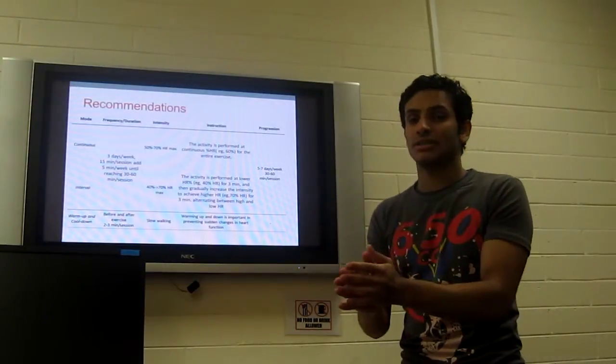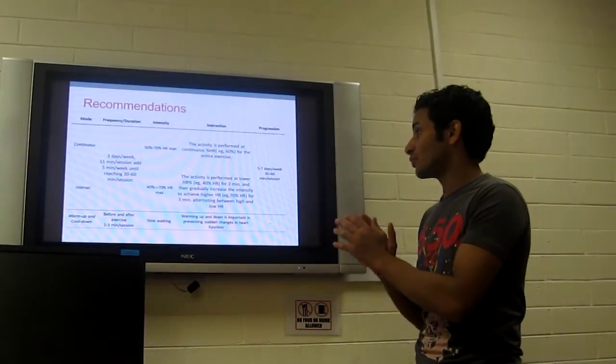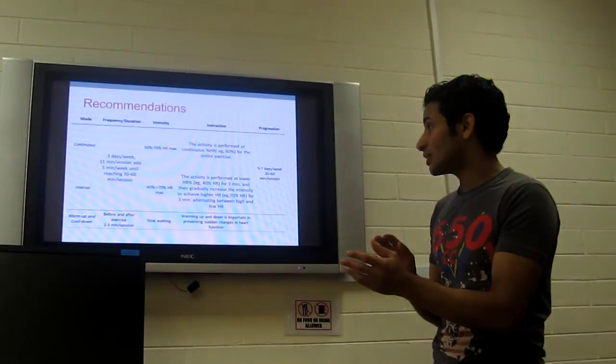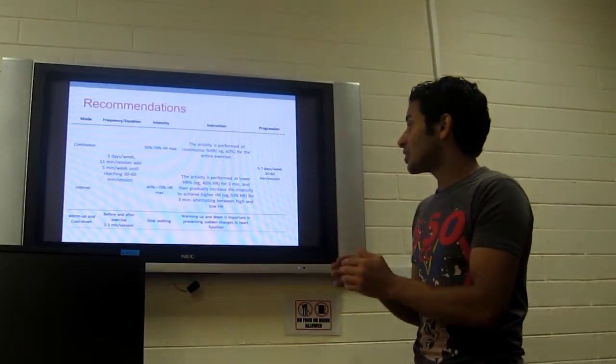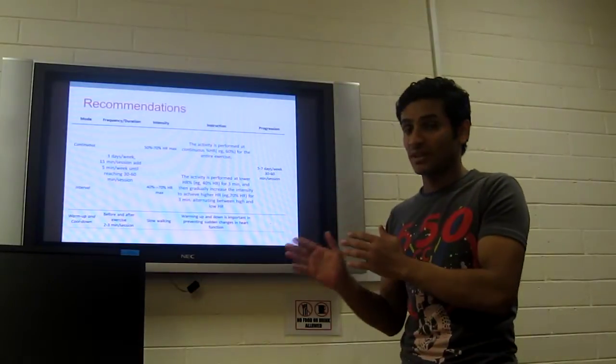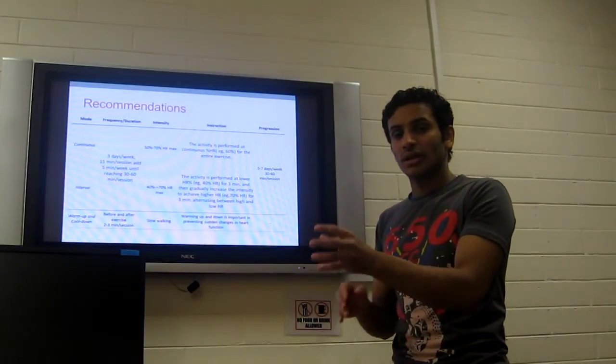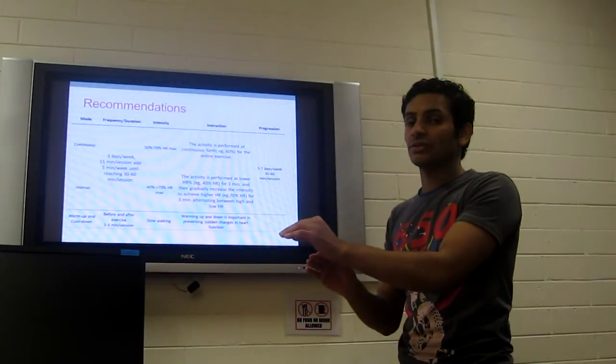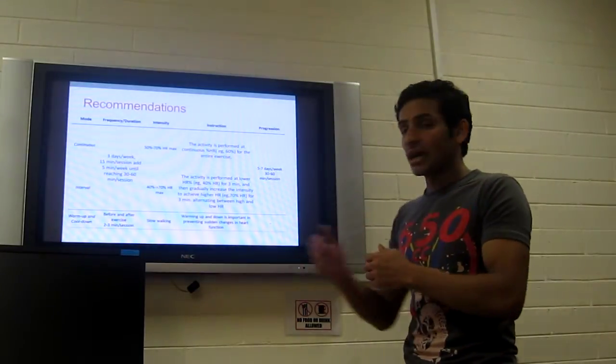While in the interval, the activity is performed at lower heart rate for three minutes, and then gradually increase the intensity to achieve higher heart rate, for example 70, for three minutes. Three minutes low heart rate, then gradually increase the heart rate for three minutes, and then alternate between high and low heart rate.